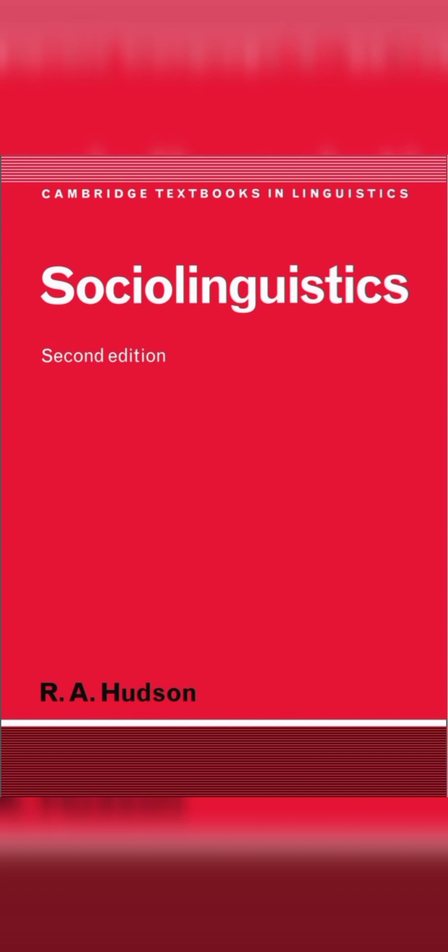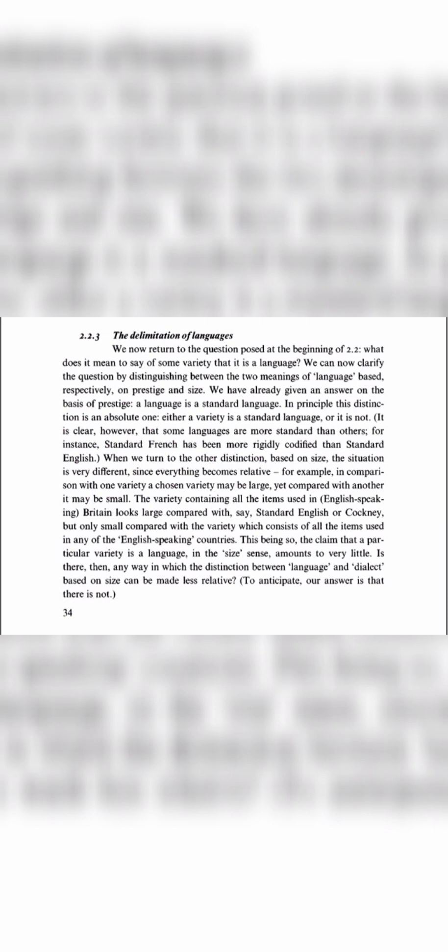Delimitation of language — the criteria is mutual intelligibility. What is mutual intelligibility? We say that if person A and person B speak two different varieties, and if they can listen to and understand each other, it means that the two varieties are the same language. This is the criteria.